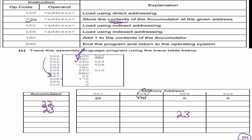Now I look at the next instruction: LDD 508. Address 508 holds 170, so I load that into my accumulator and write 170. Then they want me to increment — that gives 171. Then it wants me to store it into address 510, so I take 171 and put it at address 510. I have now reached the end of the program — the assembly language simply ends.